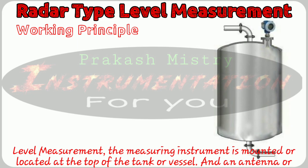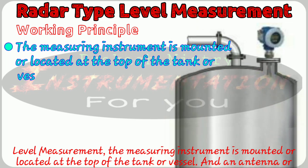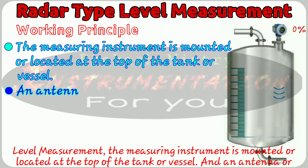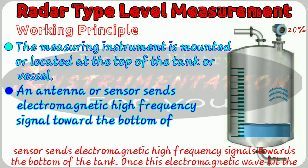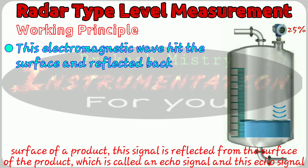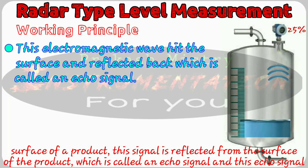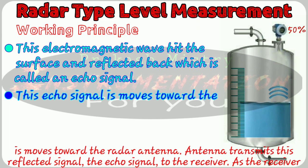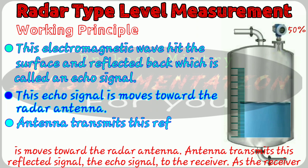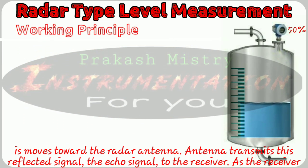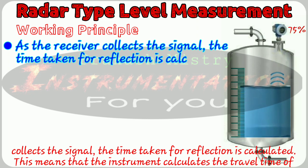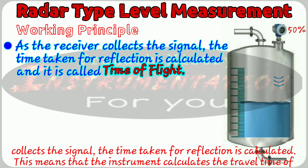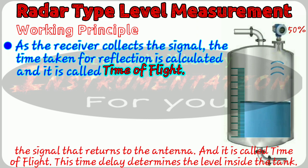In radar type level measurement, the measuring instrument is mounted at the top of the tank or vessel, and an antenna or sensor sends electromagnetic high frequency signals toward the bottom of the tank. Once these electromagnetic waves hit the surface of the product, the signal is reflected from the surface — called the echo signal — and this echo signal moves toward the radar antenna. The antenna transmits this reflected echo signal to the receiver. As the receiver collects the signal, the time taken for the reflection is calculated — this is called the time of flight.